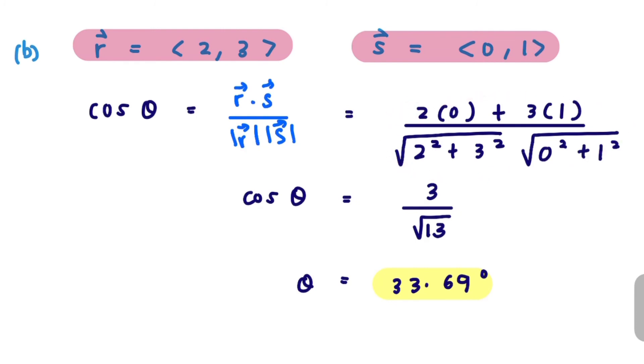So let's simplify your right hand side here. Therefore, you can find theta by finding inverse cos of 3 over square root of 13. So just use your calculator. The answer is 33.69 degrees.